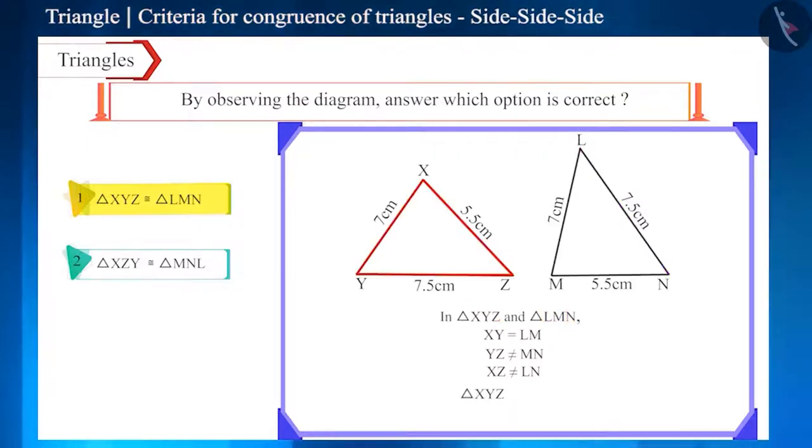Therefore, triangle XYZ and LMN are not congruent. So this option is wrong.